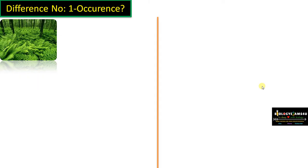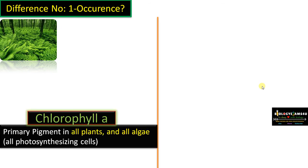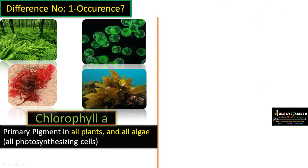Difference number one: regarding occurrence. Chlorophyll A is called the primary pigment and is present in all plants and all algae. It is the most essential pigment for photosynthesis, present in all photosynthesizing cells or all photo-autotrophs. It is present in green algae, brown algae, and even red algae.